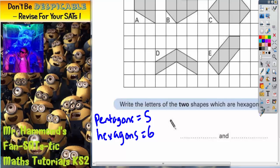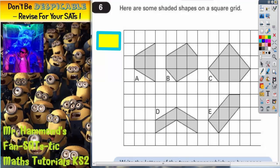So we've already been asked for hexagons, so we're looking for all the shapes with six sides. The easiest thing to do is just to count the sides.